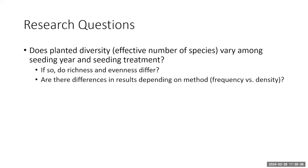Our research questions are: Does planted species diversity, as measured by the effective number of species, vary among seeding year and seeding treatments? And if so, do richness and evenness — the two components of diversity — differ? We also investigated whether results differ depending on the evaluation method: frequency counting (how frequently a plant occurs in subframes) versus density counting (the number of individuals within a species).